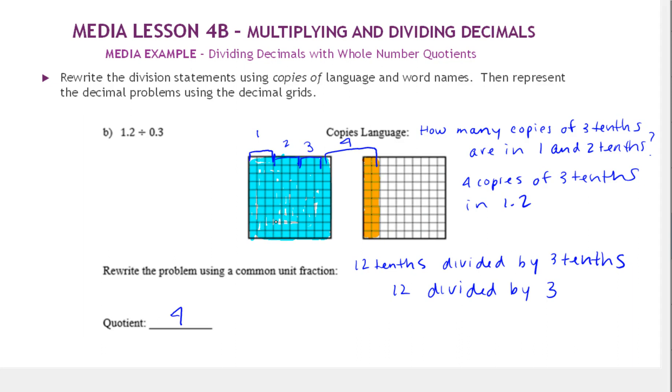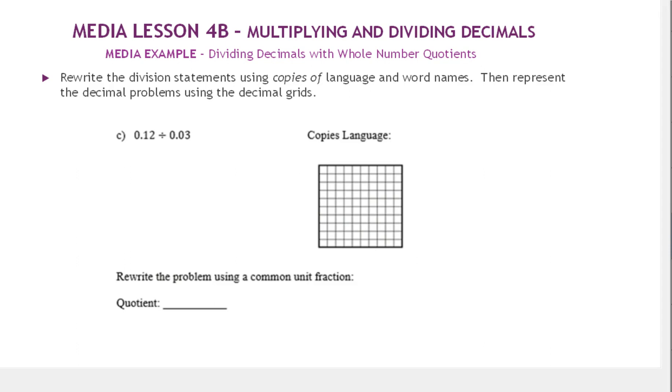Let's look at one more example. Now we have 12 hundredths divided by 3 hundredths. So our copies of language is how many copies of 3 hundredths are in 12 hundredths. So notice again, 12 hundredths is 1 tenths, but we also use the word name 12 hundredths, and that helps you see the common unit fraction here.